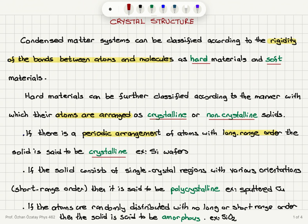A good example of a crystalline solid is a silicon wafer, where the atoms are oriented in a periodic arrangement. If the solid consists of local single-crystal regions with various orientations — meaning there is short-range order — then it is called polycrystalline.